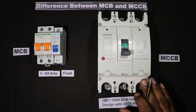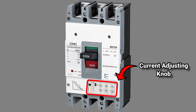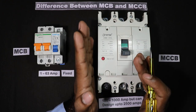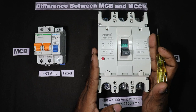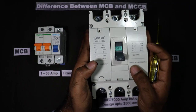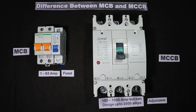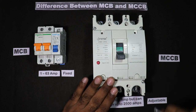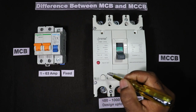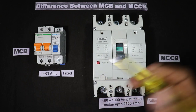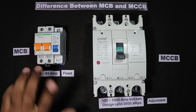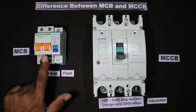Friends, the current rating of MCCB can be adjusted. There is a knob on the MCCB — in many MCCBs you will find a knob, and by rotating that knob the current rating can be decreased. The MCCB I have right now is of 200 ampere, as written here. Suppose the current rating at the installation place is 180 ampere — in that condition you can rotate the knob to decrease the current rating of the MCCB. The rated current cannot be further increased, only decreased. But in MCB you won't find any knob to increase or decrease the current rating.